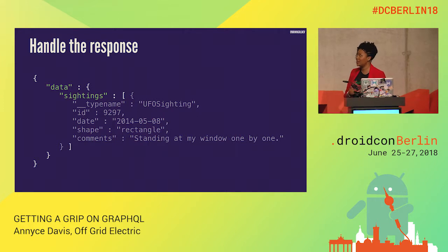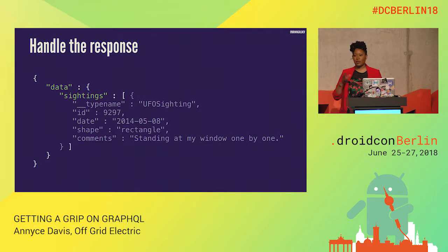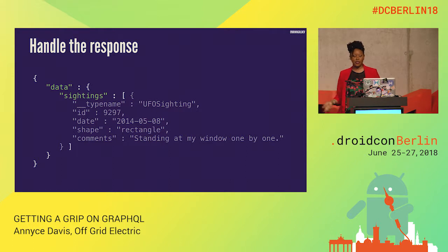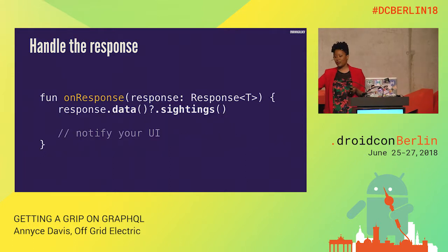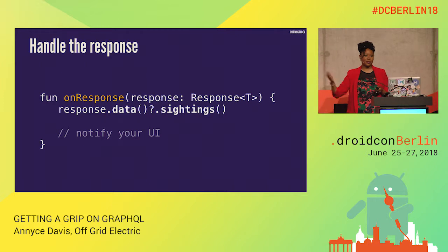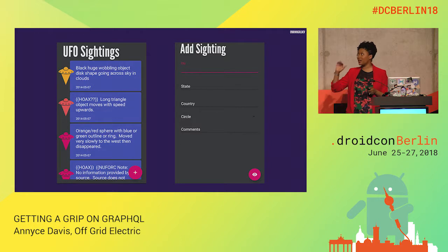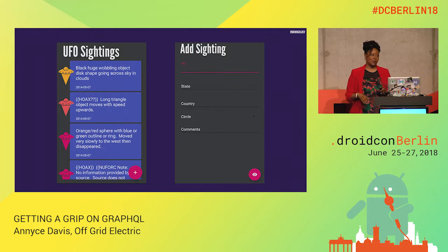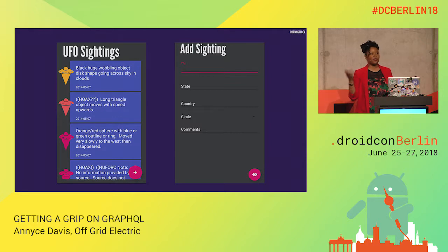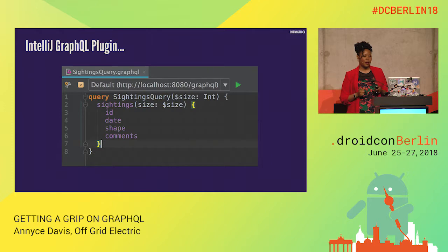The data you get back is the JSON object with the data property containing what you're actually interested in. But since you've used the plugin, all you have to do is call data.sightings — it hides all of that complexity. This is how we've been able to use GraphQL to add a new record as well as get a list of current records. The code is open source for both the server and the client if you're curious about learning more.